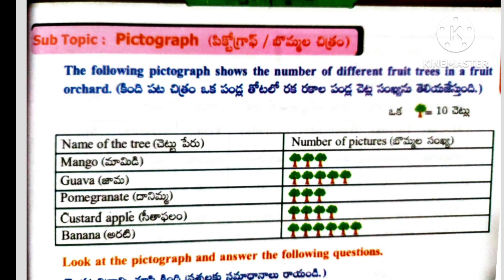Worksheet 2. Here the subtopic is pictograph. The following pictograph shows the number of different fruit trees in a fruit orchard. Here is one table with two columns, and one tree picture equals 10 trees. Name of the tree: mango. Here given three tree pictures, and each one equals 10, so total mango trees equal to 30.